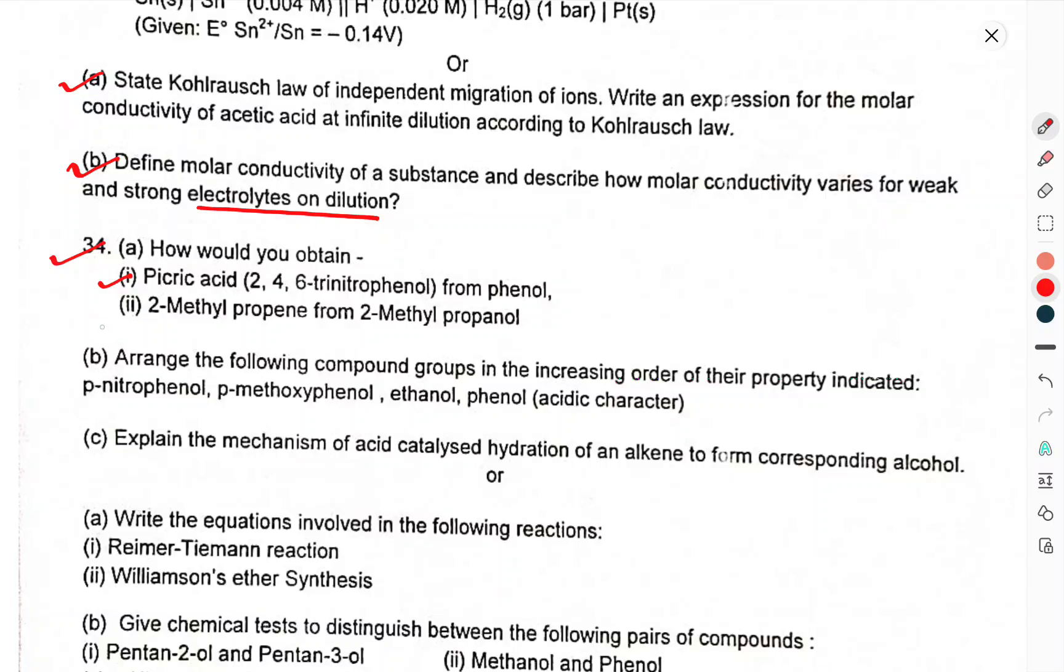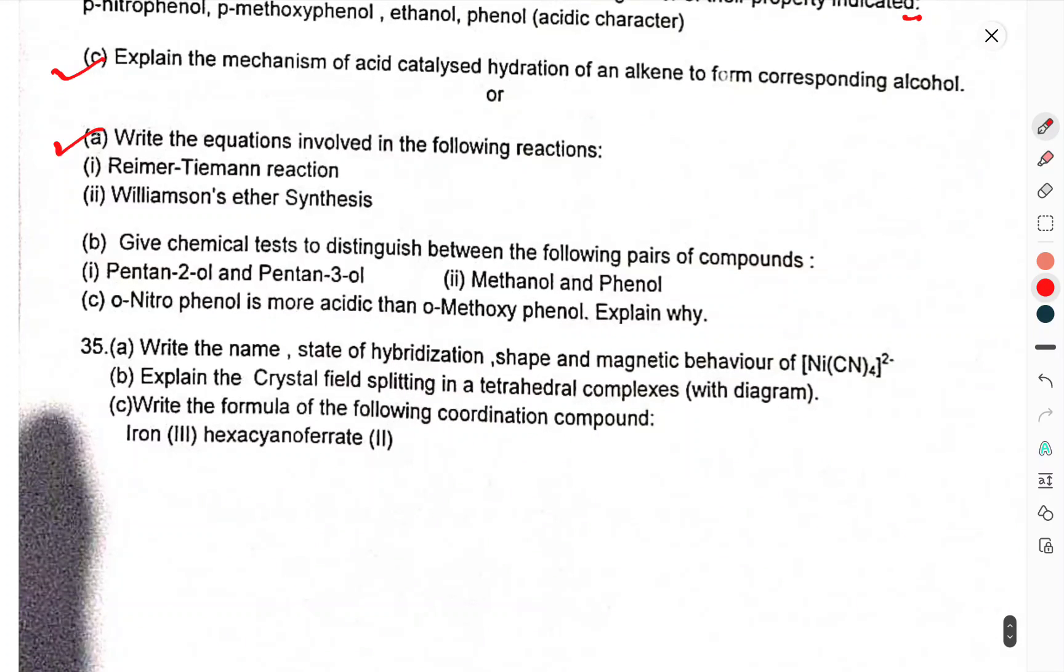Question 32: How would you obtain picric acid from phenol and 2-methylpropene from 2-methylpropanol? Arrange the following compounds in increasing order of the property indicated: p-nitrophenol, p-methoxyphenol, ethanol, phenol (acidic character). Explain the mechanism of acid-catalyzed hydration of an alkene to form corresponding alcohol. Or, write equations involved in the following reactions: Reimer-Tiemann reaction, Williamson ether synthesis. Give chemical tests to distinguish between the following pairs of compounds: Pentan-2-ol and Pentan-3-ol, Methanol and Phenol. o-nitrophenol is more acidic than o-methoxyphenol - explain why.